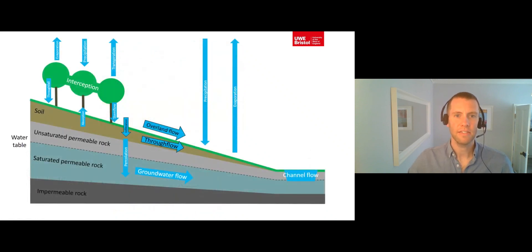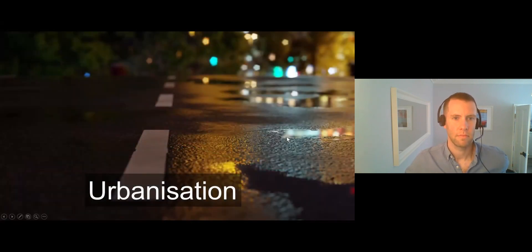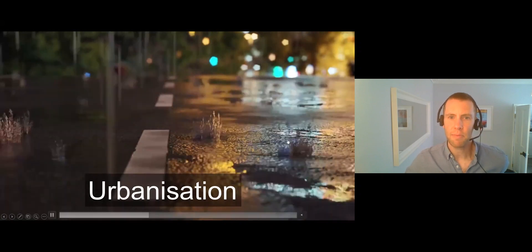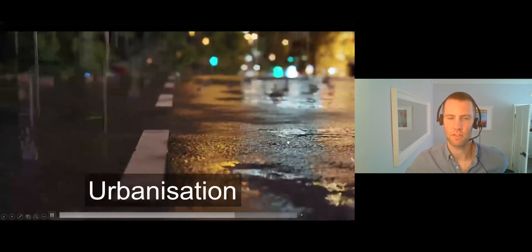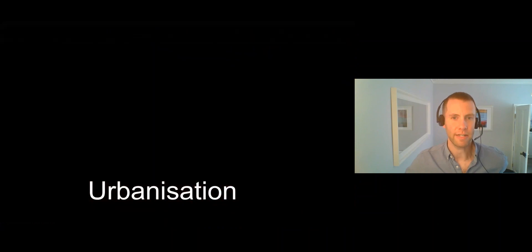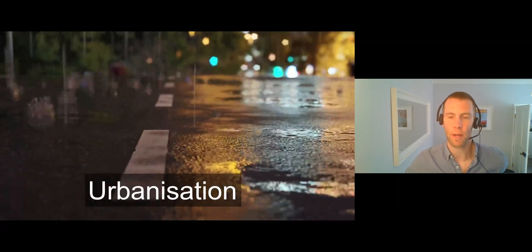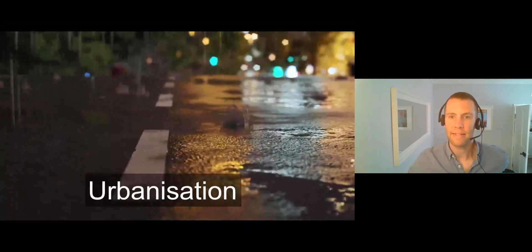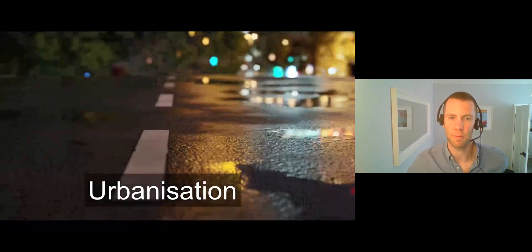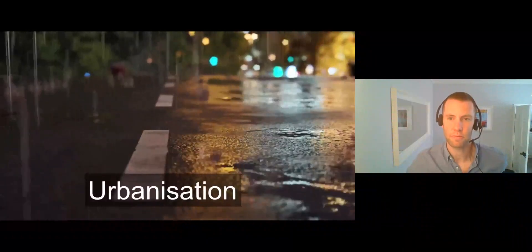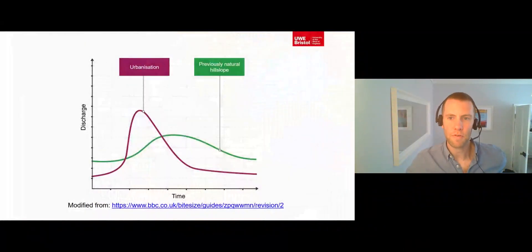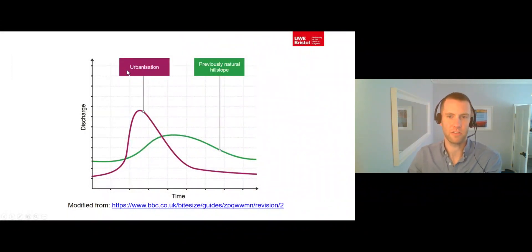Now, let's consider how humans can impact the process of overland flow, infiltration and through flow. The growth of urban areas typically leads to an increase in impermeable surfaces on hill slopes, which increases the amount of overland flow, entering rivers quickly as storm flow. Additionally, artificial drainage systems within urban areas increases the speed of through flow. Both of these factors increase the amount of storm flow, which results in urbanised drainage basins being much flashier than natural drainage basins.